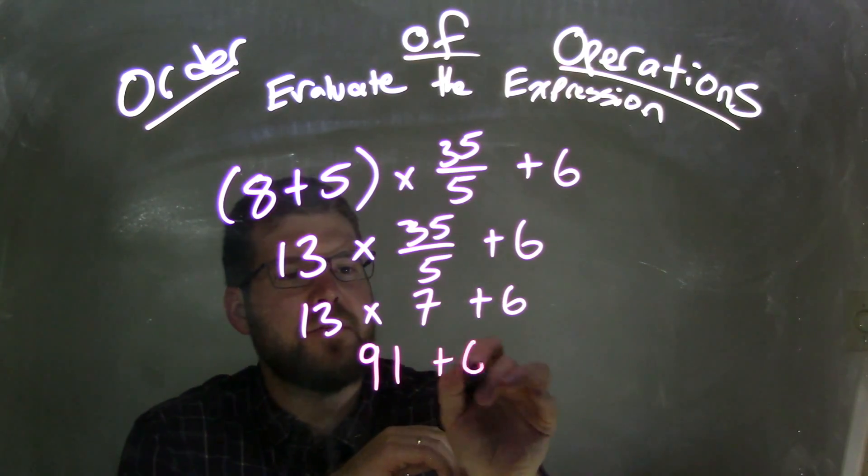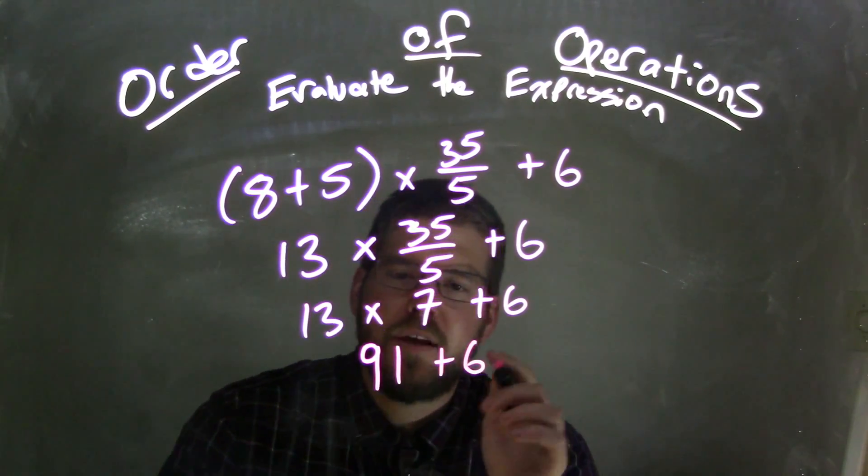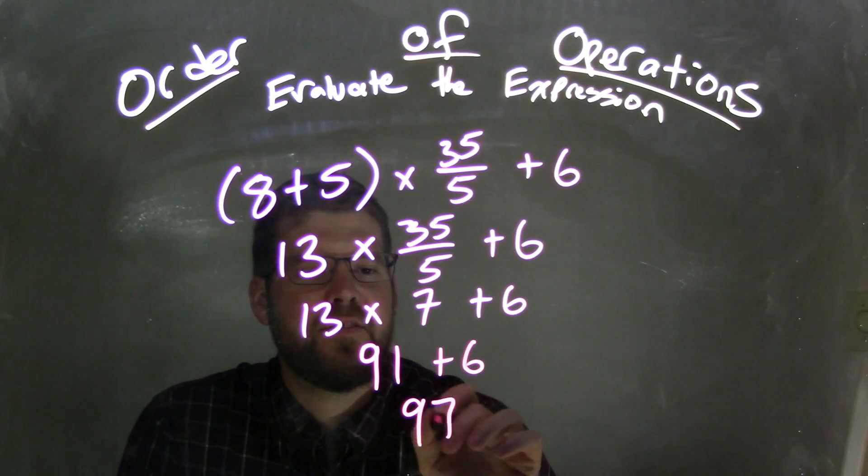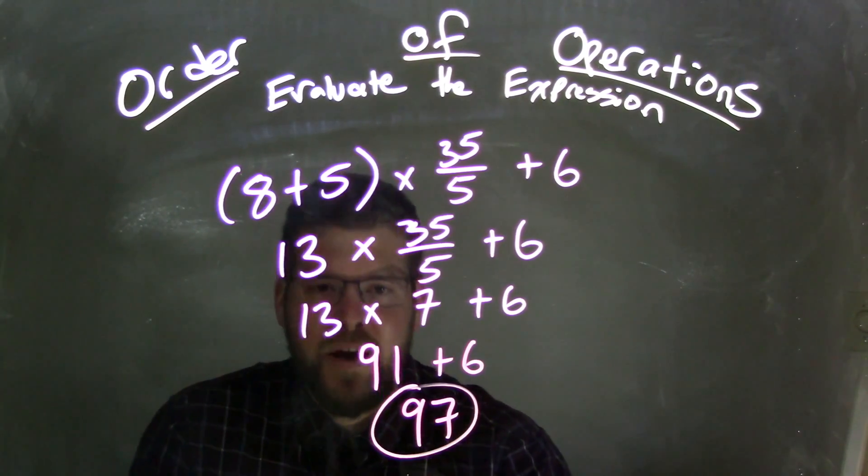So we have 91 plus 6. 91 plus 6 comes out to be 97. And that is our final answer.